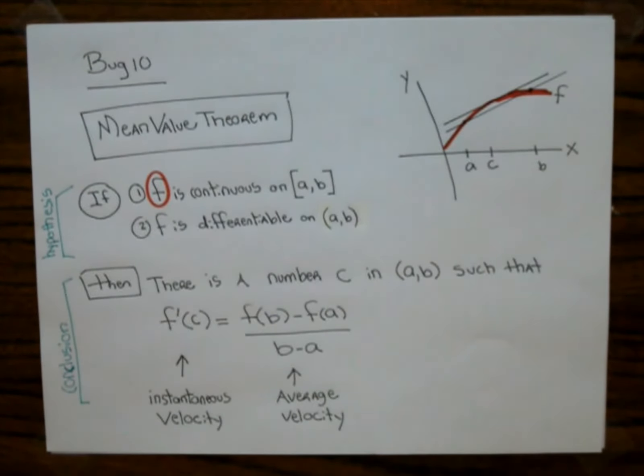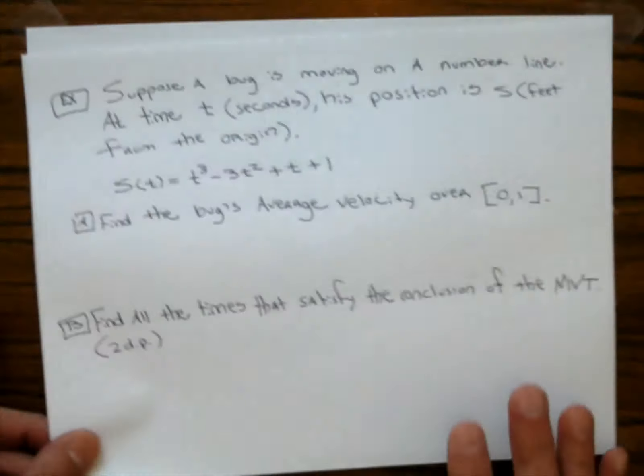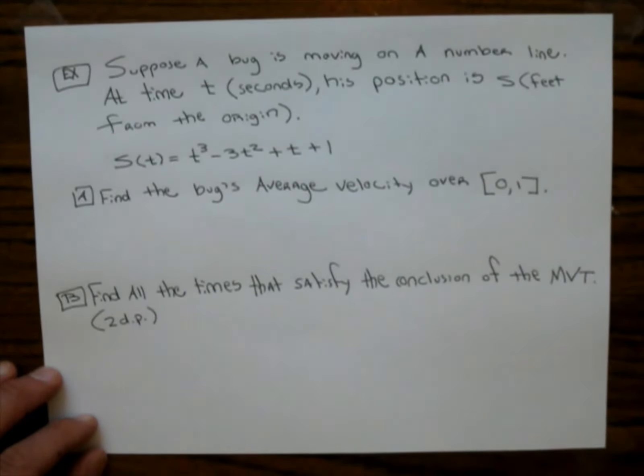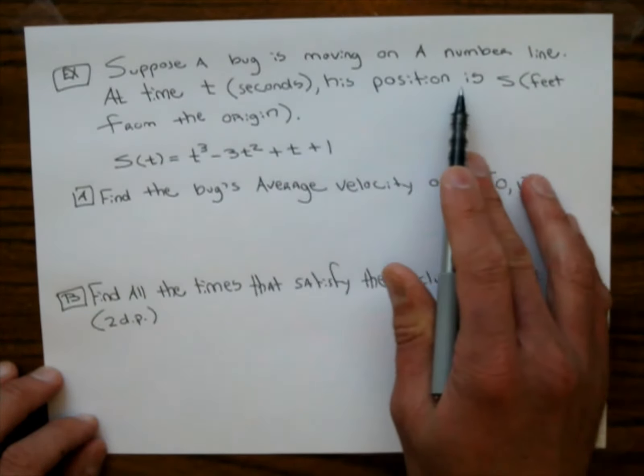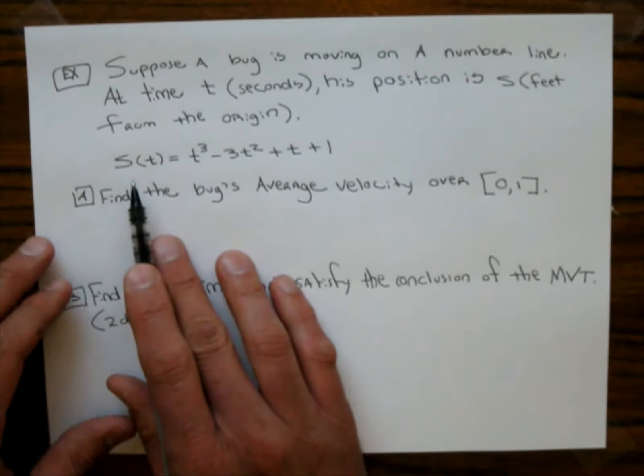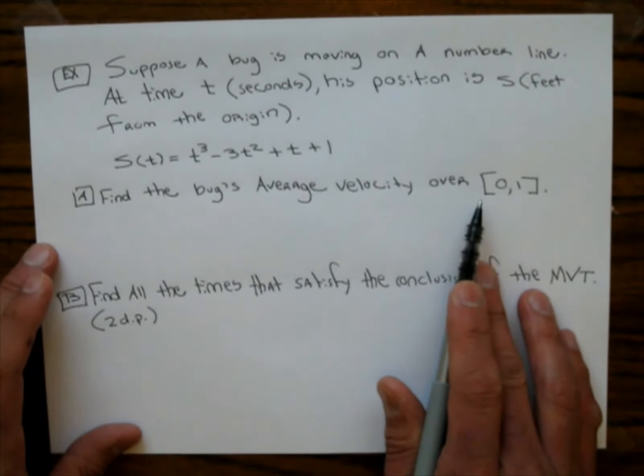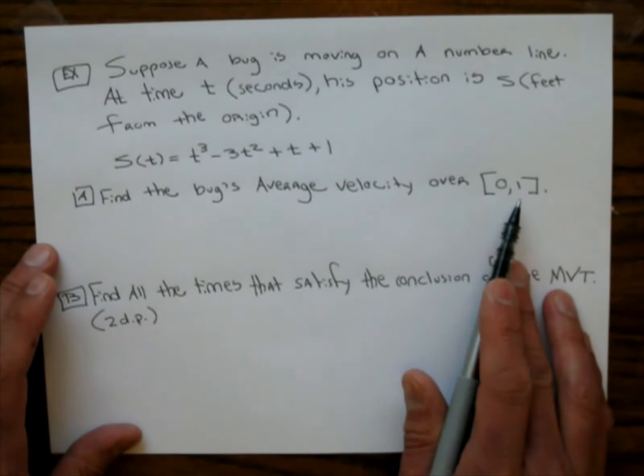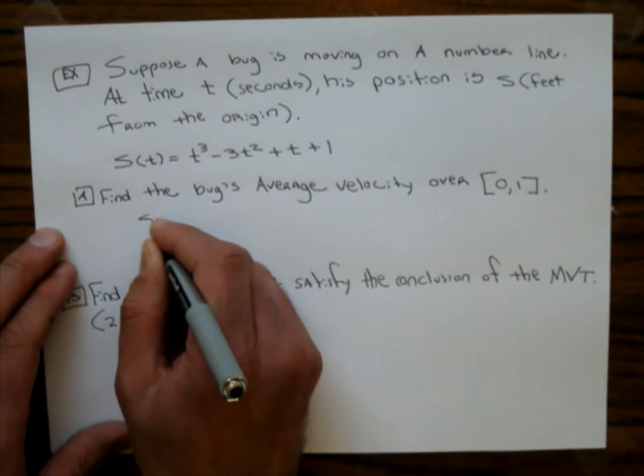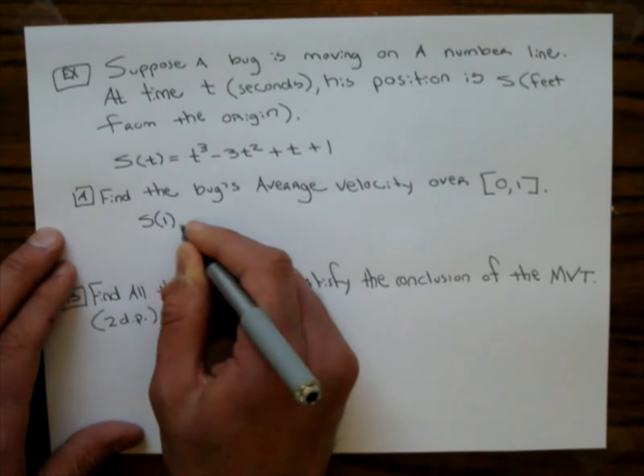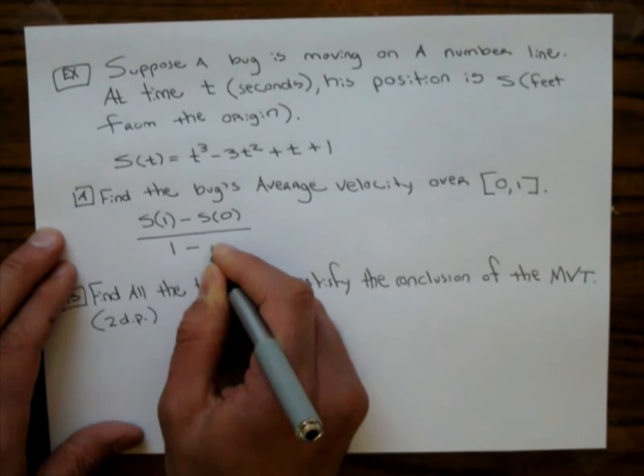Let's go ahead and do a problem from Bug 10. Suppose a bug is moving on a number line at time t seconds. His position is s feet from the origin. So here's function s here. It says, find the bug's average velocity over the time interval from 0 to 1. So this is a question we've done in the past.